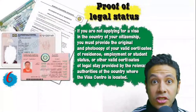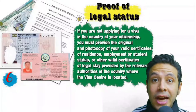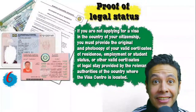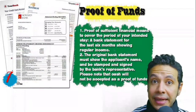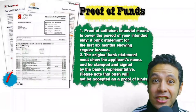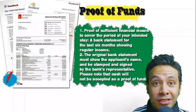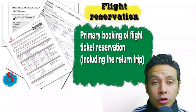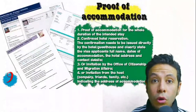If you are applying from a country different from your own, provide proof of legal status — a certificate of legal residence or a valid residence visa. You also need to provide proof of sufficient funds: a bank statement showing your balance for at least six months, signed and stamped by bank representatives. Cash is not accepted as proof of funds. You should also provide a flight reservation including a return ticket — initial booking is usually acceptable.